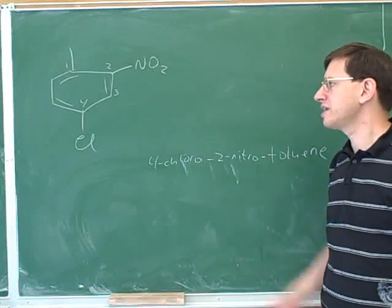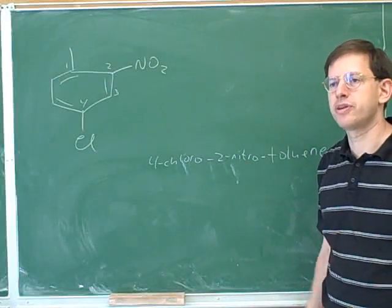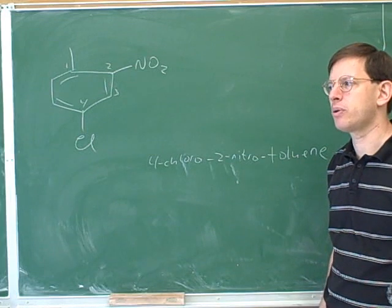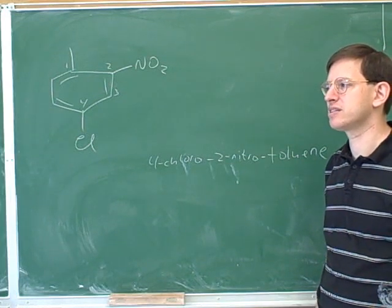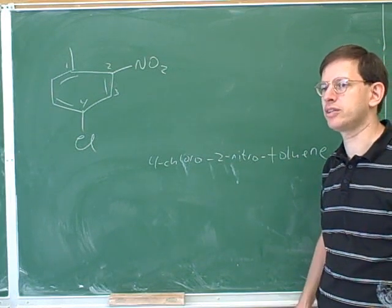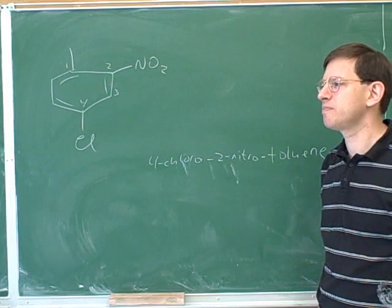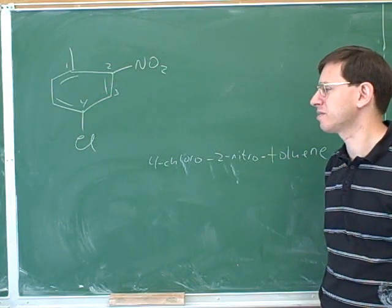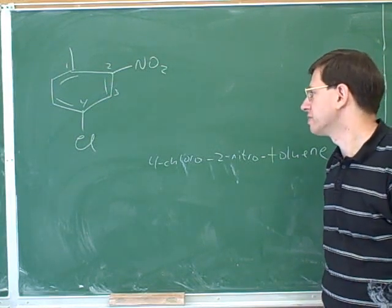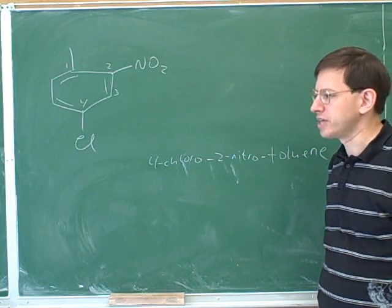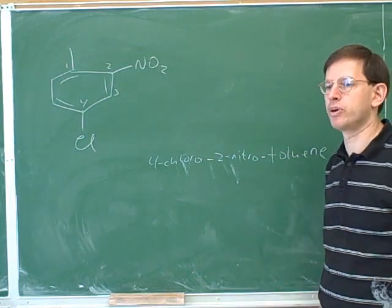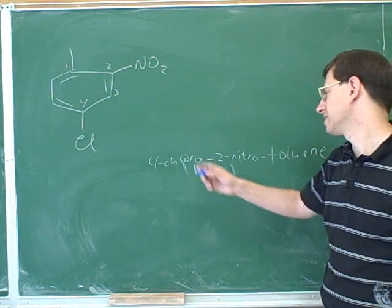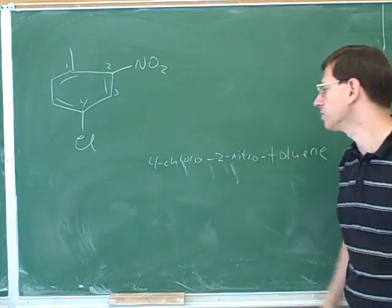Essentially, you also tried naming this using the ortho-meta-para approach, but if you think about it, you'll see that ortho, meta, and para only make sense when there's exactly two substituents. It really doesn't make sense to use ortho, meta, and para if there's anything besides two substituents. If there's only one substituent, obviously you wouldn't use it, and if there's three or more, you wouldn't use it. So here we have a tri-substituted benzene, so ortho, meta, and para don't apply.